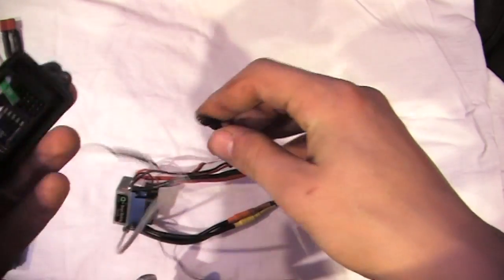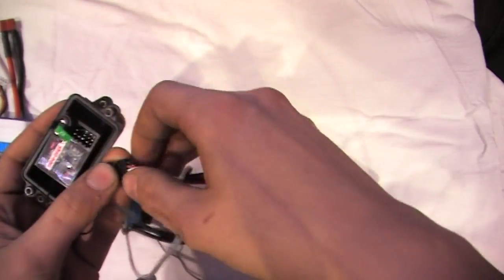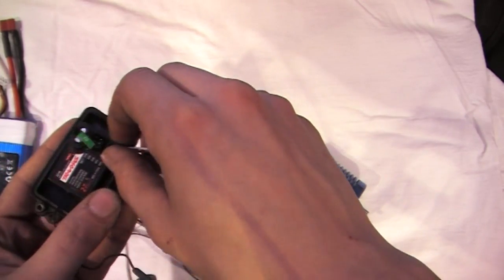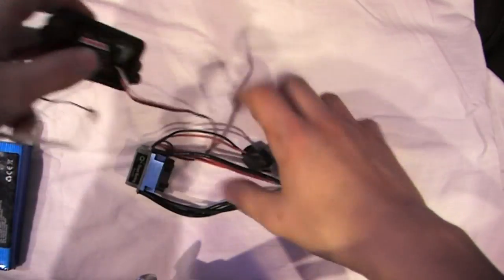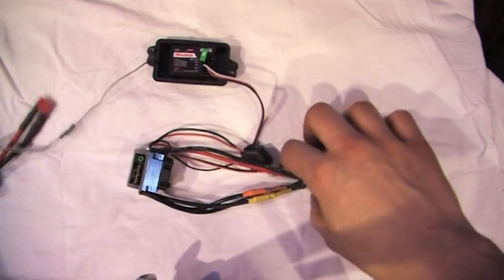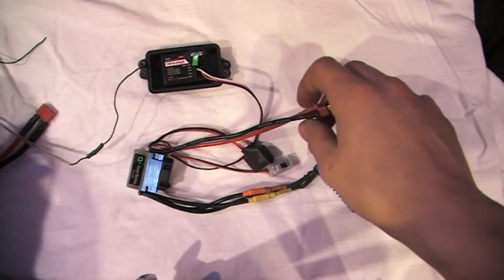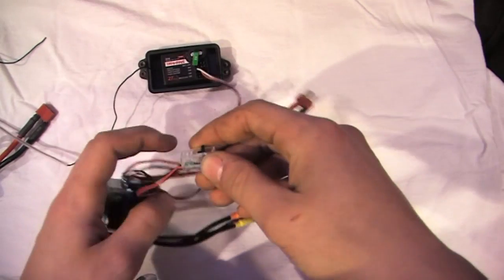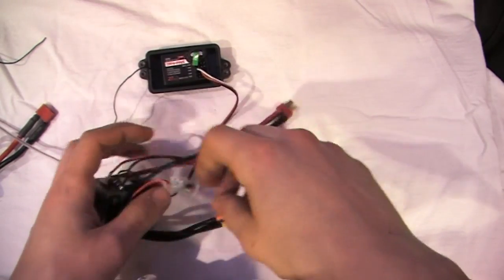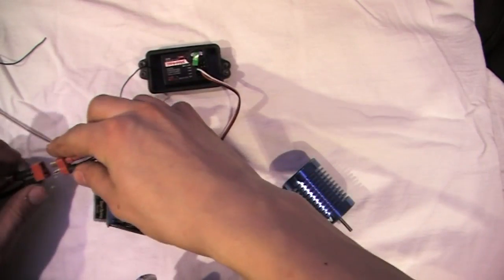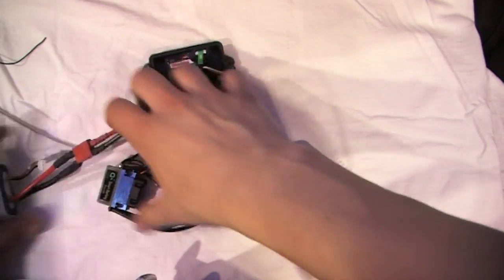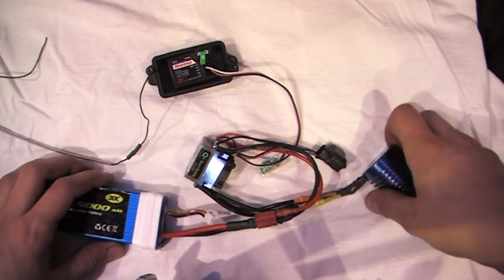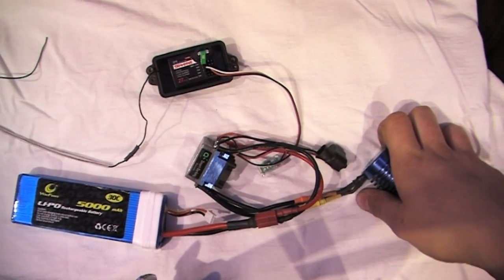This receiver uses channel 2 for the throttle, which is kind of normal, so plug that right in and then we're set apart from the battery. Make sure the ESC is turned off, mine currently is turned off, and then connect the battery. There we go, let's put everything over here.